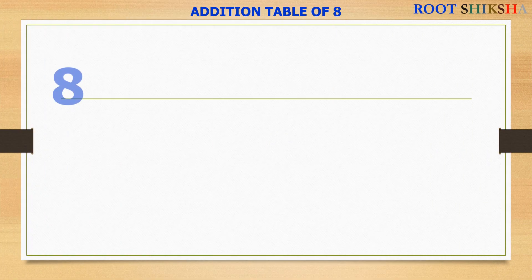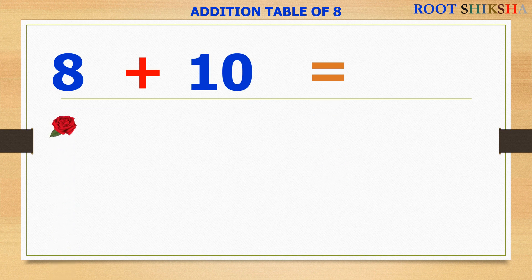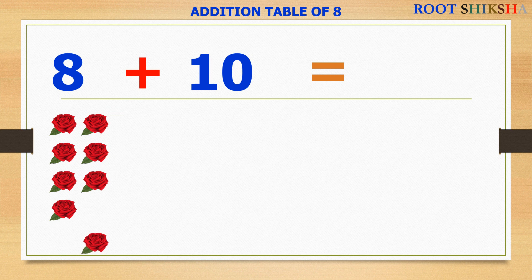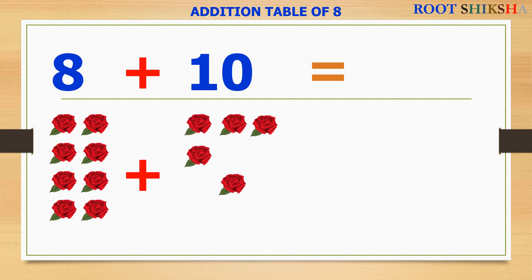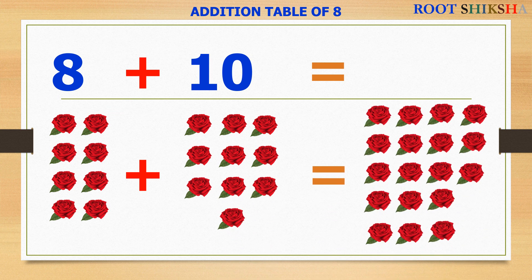8 plus 10 equals to — count with me: 1, 2, 3, 4, 5, 6, 7, 8, 9. 10 equals to: 1, 2, 3, 4, 5, 6, 7, 8, 9, 10, 11, 12, 13, 14, 15, 16, 17, 18. 8 plus 10 equals to 18.